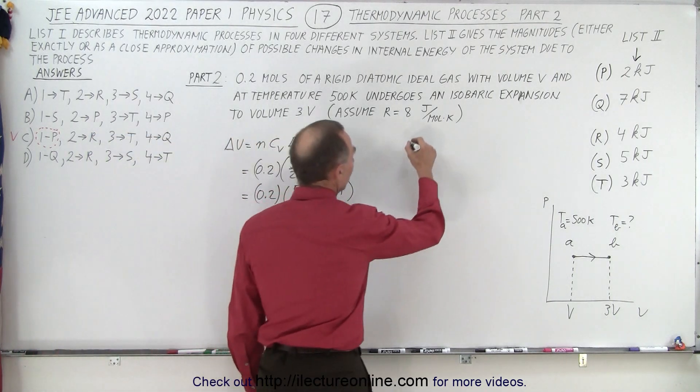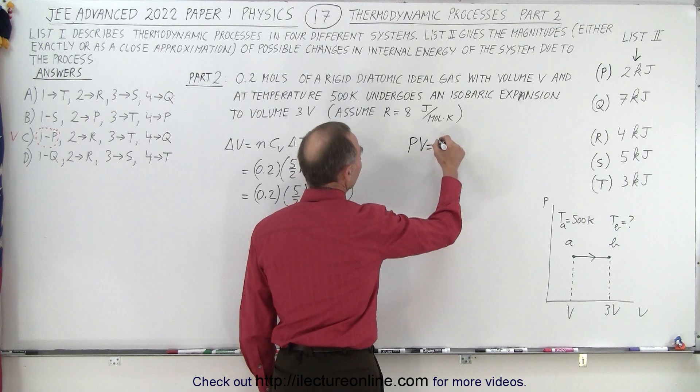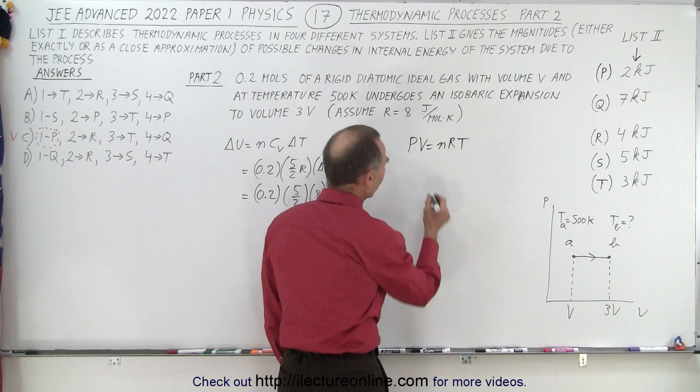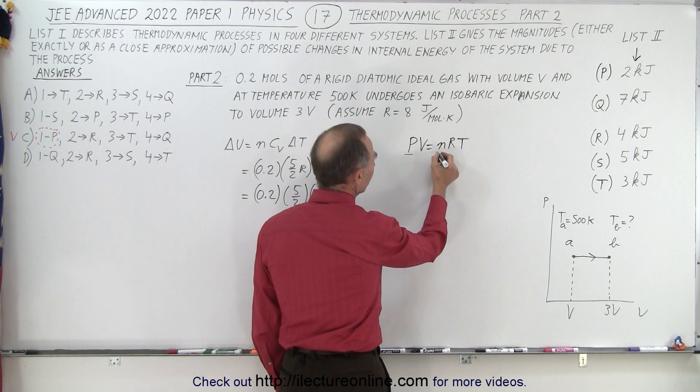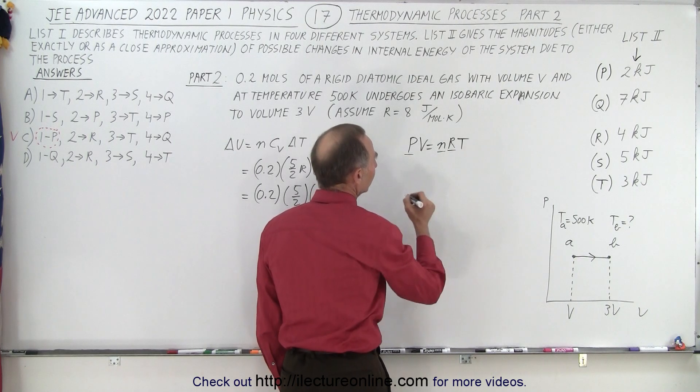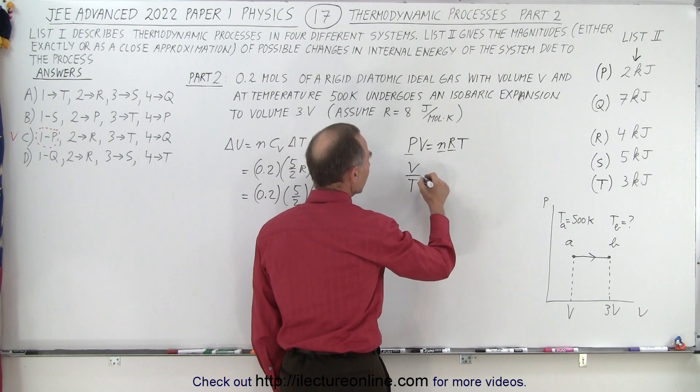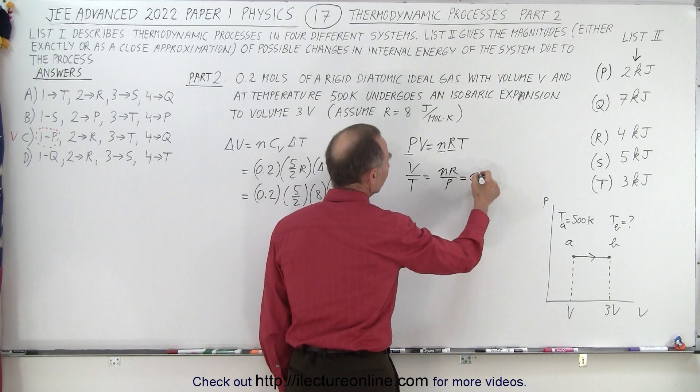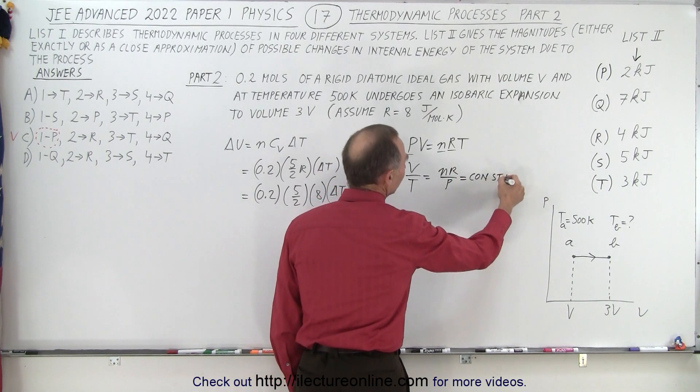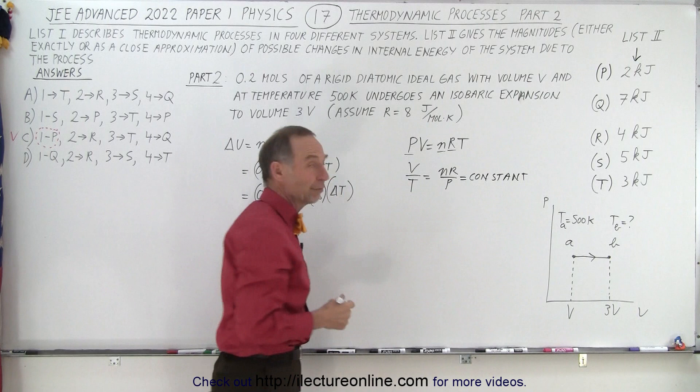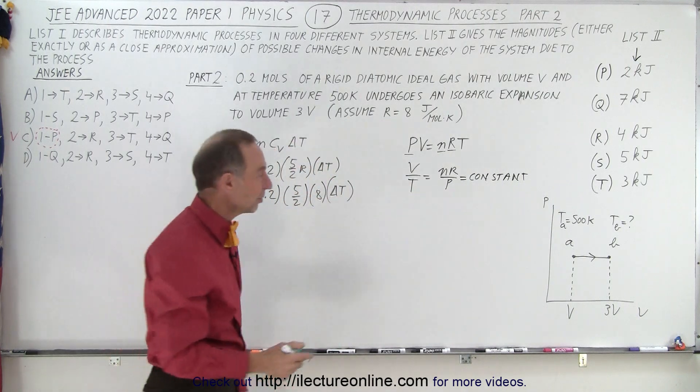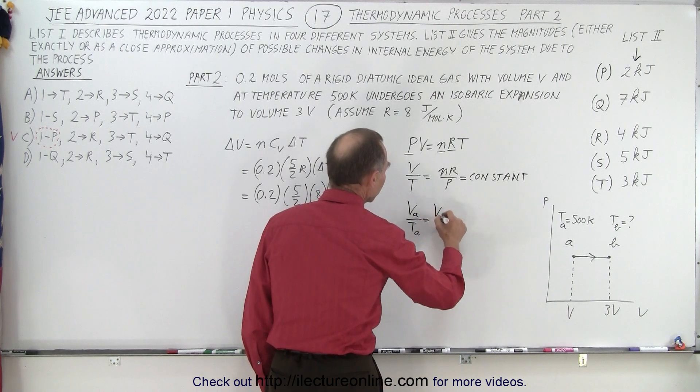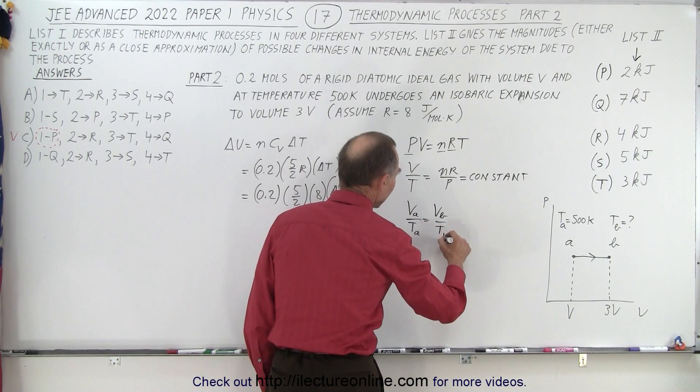Now if we start with the equation PV is equal to N R T, then we can identify what remains constant. The pressure remains constant, the number of moles is constant, and R is constant, which means that V over T is equal to N R over P, which is constant. So in this case, for this process, we can say that the ratio of volume to temperature is constant.